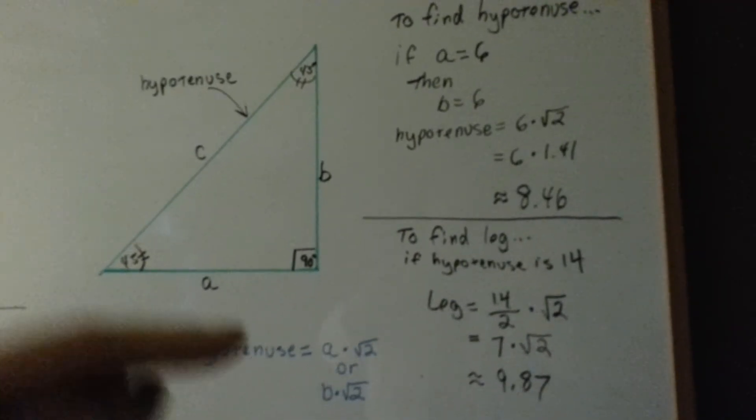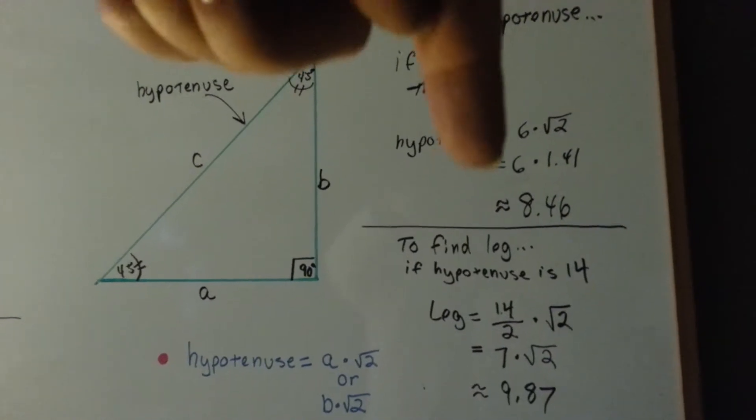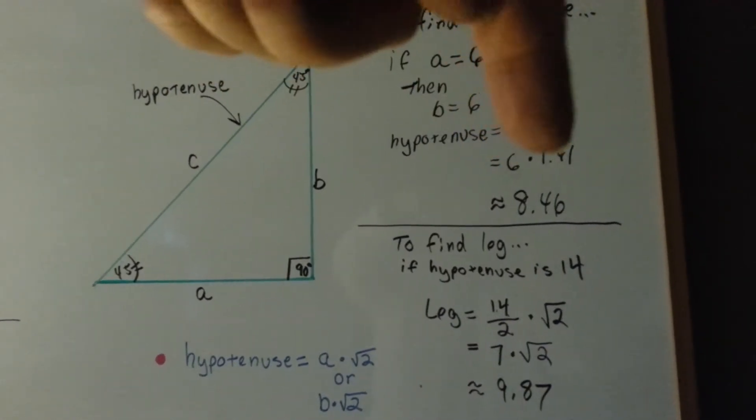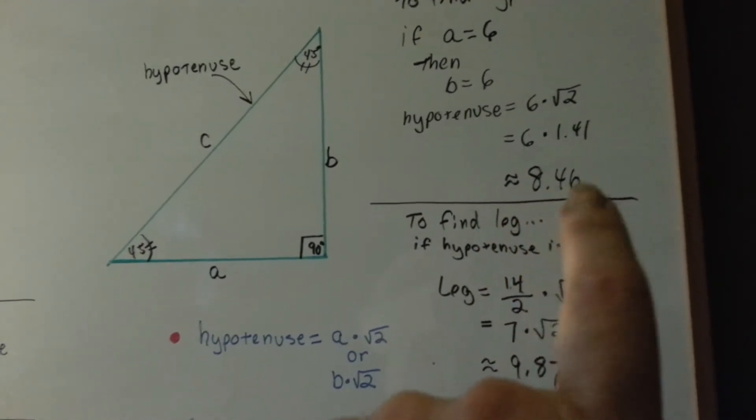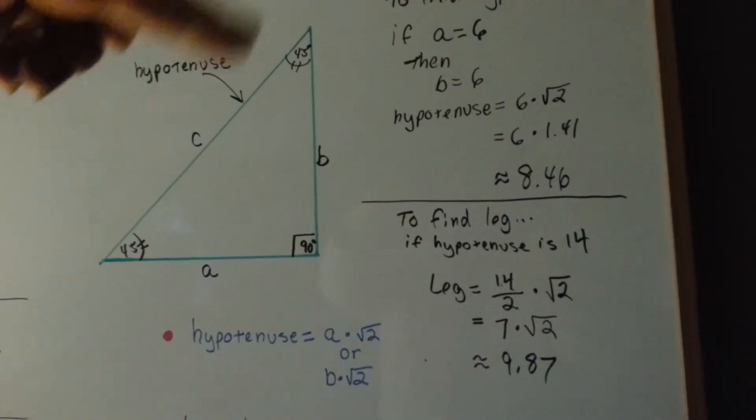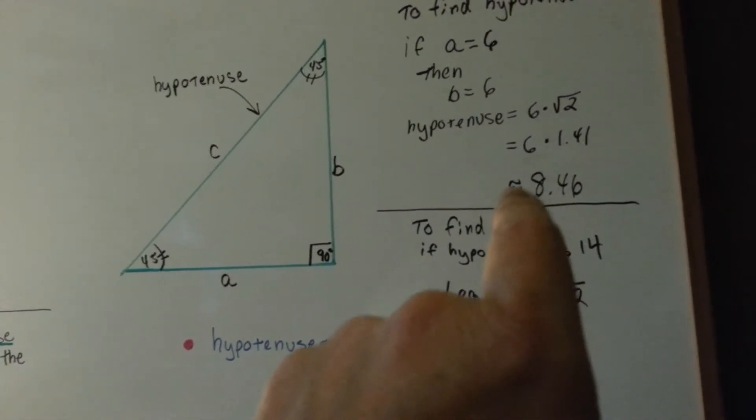6 times the square root of 2. 6 times 1.41. And it comes out to be approximately 8.46. So, in that case, the hypotenuse would be approximately 8.46. And boy, don't forget that approximate sign.